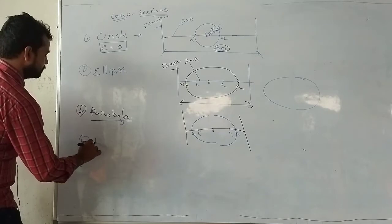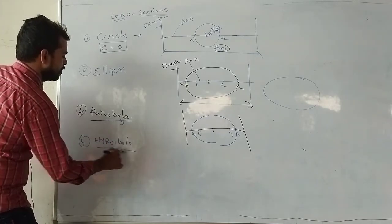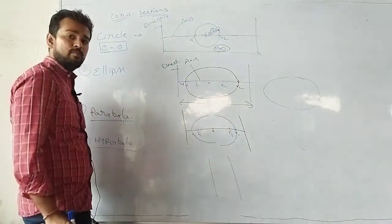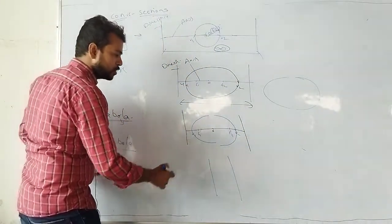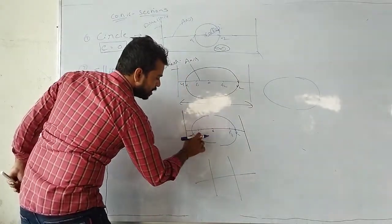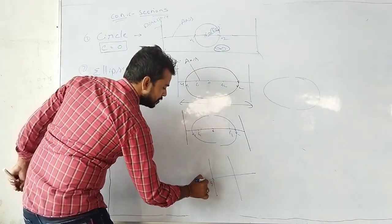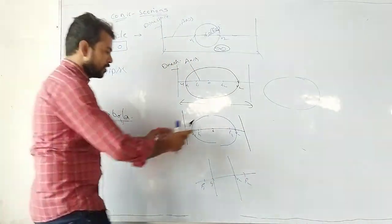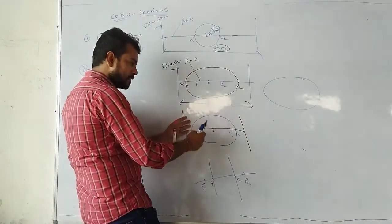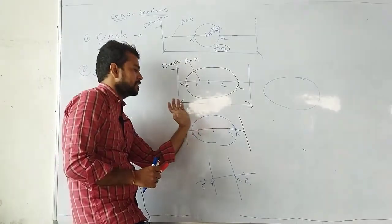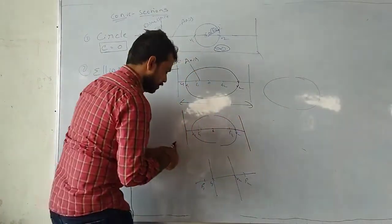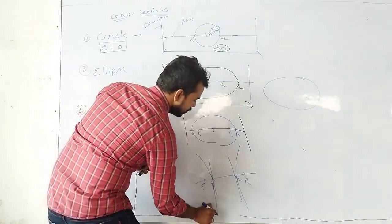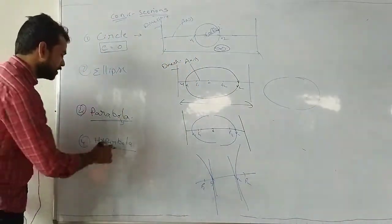For hyperbola, the directrices come even more closer. Here F1 crosses V1. The dielectrices come more close than in parabola, and the parabola becomes like this — that is how the hyperbola is formed. This is also an open curve, hence 'bola'. 'Hyper' means more.